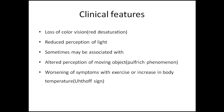Sometimes these visual disturbances could also be associated with altered perception of a moving object, known as the Pulfrich phenomenon. To demonstrate it, we can do the pendulum test — a pendulum is hung in front of the patient's eyes. Instead of a to-and-fro movement, the patient sees an elliptical motion of the pendulum. That elliptical motion is due to altered visual potentials from the diseased nerve. There could also be worsening of symptoms with exercise or increase in body temperature, known as Uhthoff's sign.